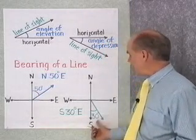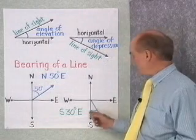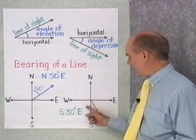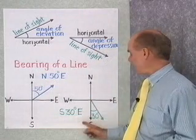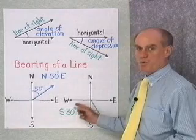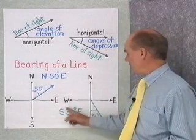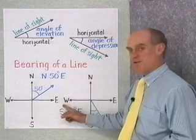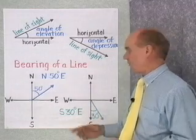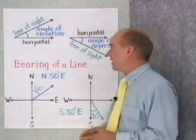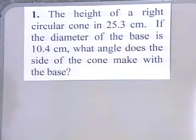This angle right here we would say is south 30 degrees east. If the line went the other way, the bearing would be south 30 degrees west. So first we name the north-south line, then the number of degrees, and then whether it's east or west from there. Let's go to the board now and look at our first application problem.